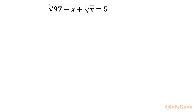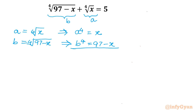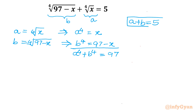Let us begin this problem by considering the first term as a and the second term as b. So a equals the 4th root of x, and b equals the 4th root of (97 minus x). Then a⁴ equals x and b⁴ equals 97 minus x. Adding both equations gives us a⁴ plus b⁴ equals 97 — call this equation 1. From the original, a plus b equals 5 — call this equation 2.